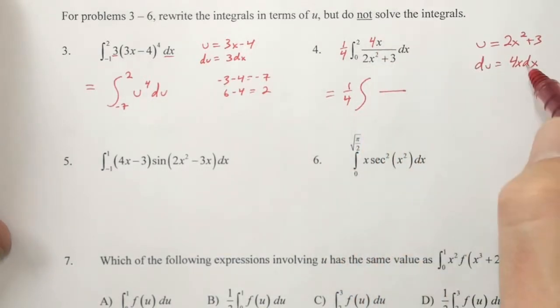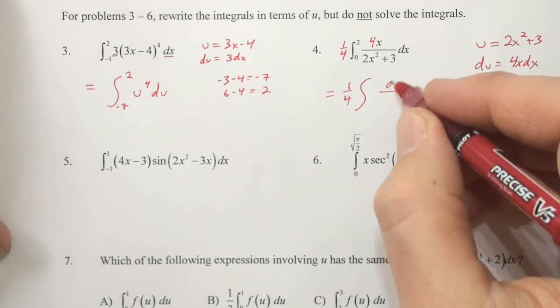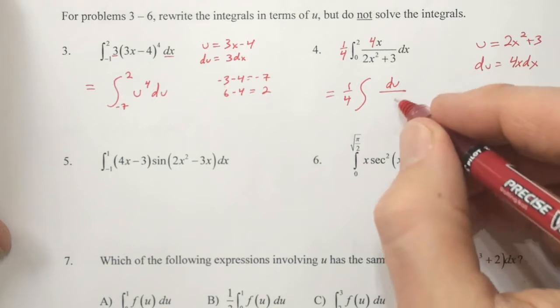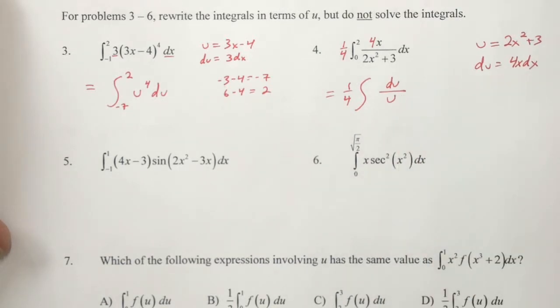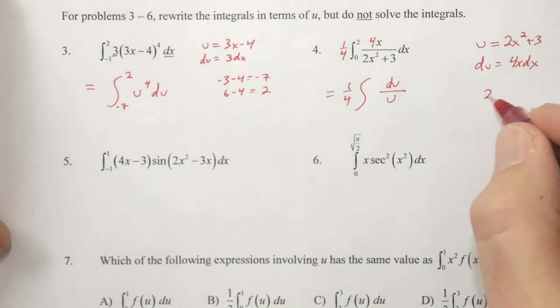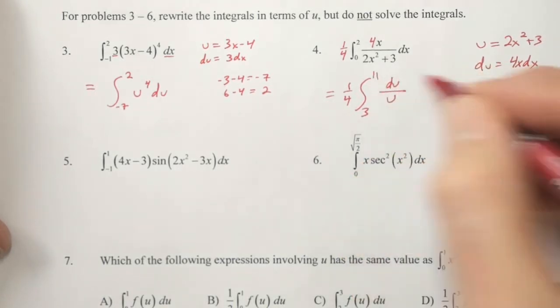Hold off on the bounds for a moment. The 4x and the dx, they're the same thing as du, so du goes in the numerator. 2x squared plus 3 is u, so u's in the denominator. We're going to plug 0 and 2 in for our new bounds: 2 times 0 squared plus 3, 2 times 2 squared plus 3. Our new low bound is 3, our new upper bound is 11.